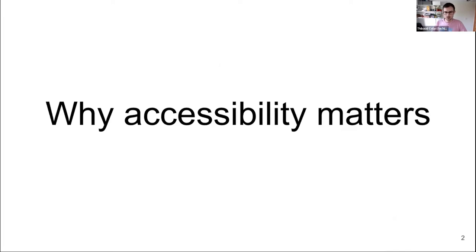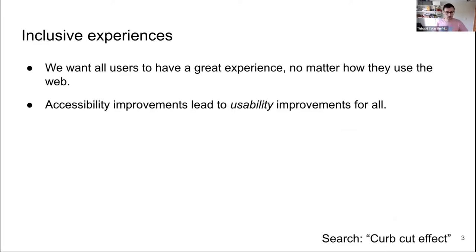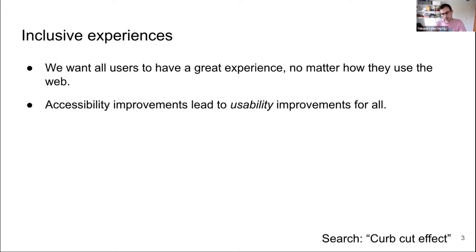Why does this matter? Why do we care? It comes down to the simple fact that we build websites for people, and we want people to be able to access the sites we build and invest lots of time in, no matter their abilities, background, or current situation. The other day I was trying to use my password manager with my keyboard because I couldn't reach my mouse — it wasn't working. Accessibility improvements generally lead to usability improvements for all. This is called the curb cut effect, which you should look up if you're interested.